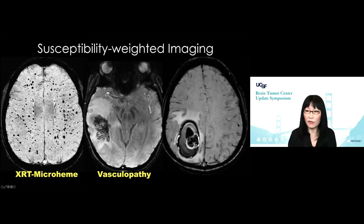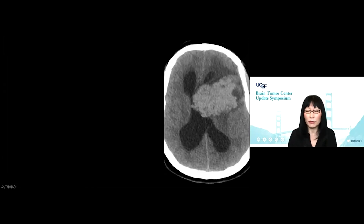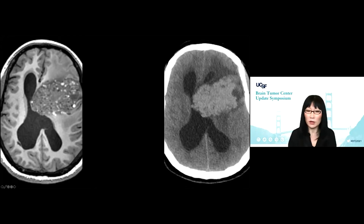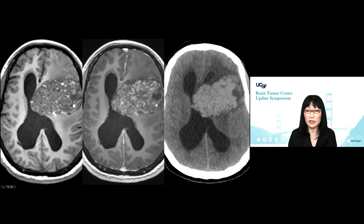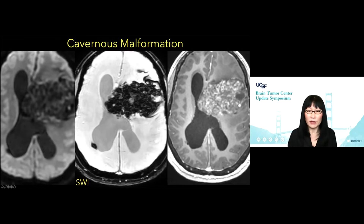We also see a stacked appearance of vasculopathy — whether treatment-related or as in this case a patient with venulitis, inflammation of the venous structures — and susceptibility weighted imaging can capture that as well. And we can also see a mass that's predominantly hemorrhagic. Here's a case from a couple of weeks ago: a patient having headaches, CT shows a mass. Based on MR and CT, the diagnosis can be challenging. But once you add susceptibility weighted imaging, there's no question that 99% of this mass is composed of blood products. This is a path-proven cavernous malformation.